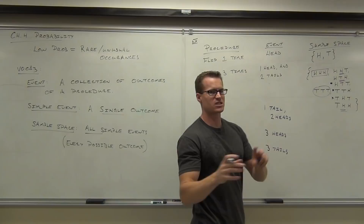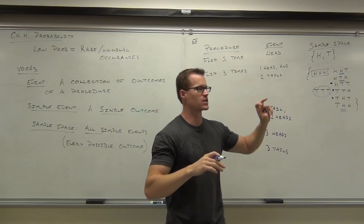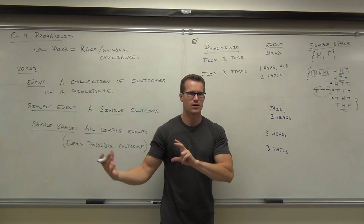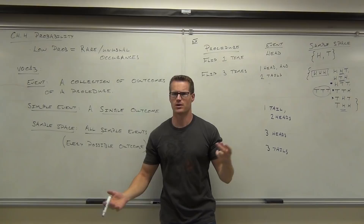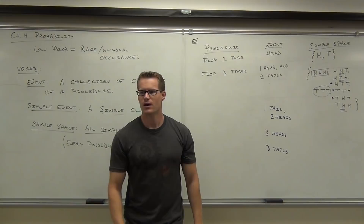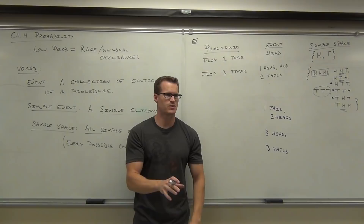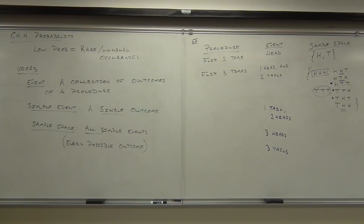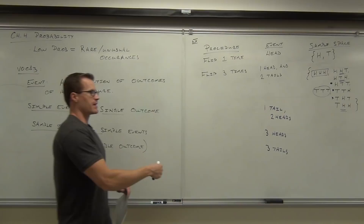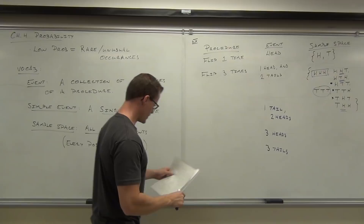So, the relationship between simple events and events: events are the overall thing you're looking for; simple events are the individual outcomes you could get from your procedure. Some of those simple events are going to satisfy your event — maybe only one, maybe up to three or more. The sample space is just a collection of all the individual simple outcomes — that's it.